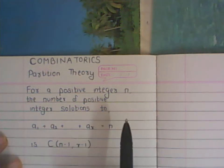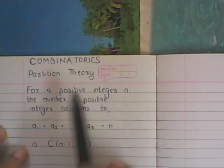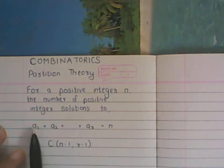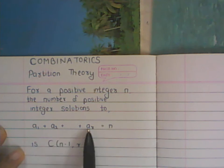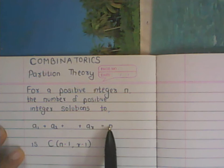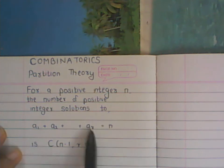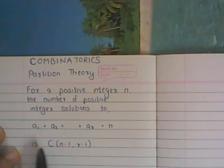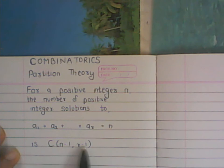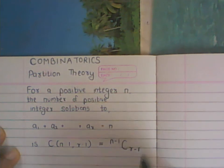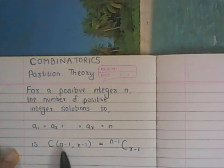In this video I want to talk about the intuition behind a concept in combinatorics — specifically in partition theory — which says that for a positive integer n, the number of positive integer solutions to the equation a₁+a₂+...+aᵣ=n is given by the formula C(n-1, r-1), written as n minus one choose r minus one. Many people are confused about where this minus one comes from, so I'll talk about the intuition behind this using an example.